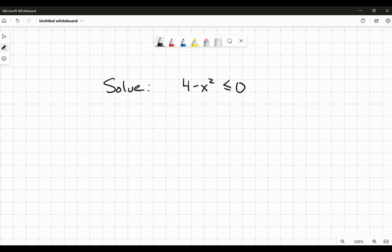Okay, hi everybody. So in this video we're going to solve the inequality 4 minus x squared is less than or equal to 0.